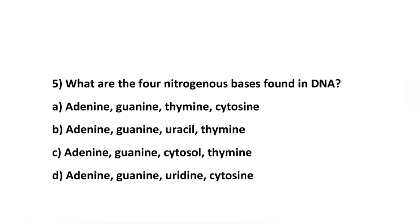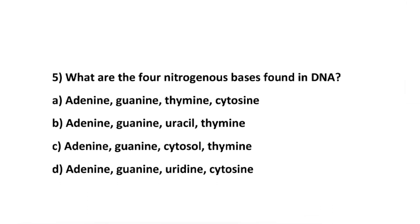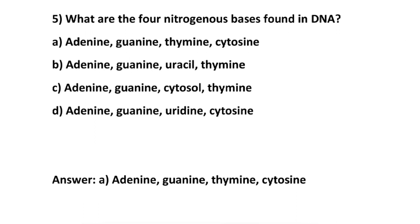Number 5: What are the 4 nitrogenous bases found in DNA? Option A: Adenine, Guanine, Thymine, Cytosine. Option B: Adenine, Guanine, Uracil, Thymine. Option C: Adenine, Guanine, Cytosol, Thymine. Option D: Adenine, Guanine, Uridine, Cytosine. The correct answer is option A: Adenine, Guanine, Thymine, and Cytosine.